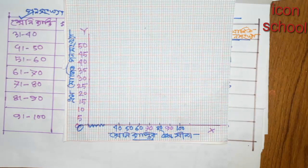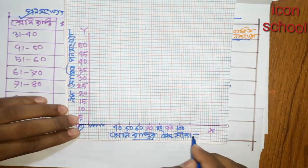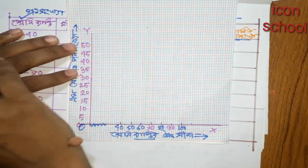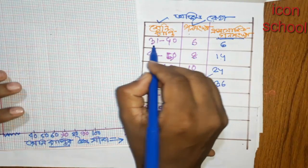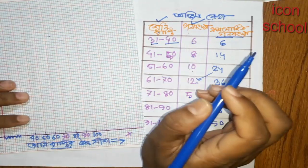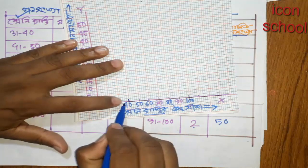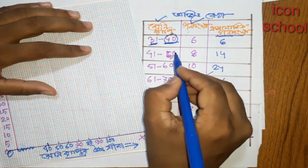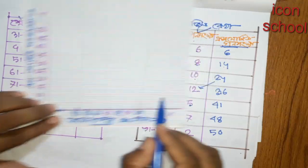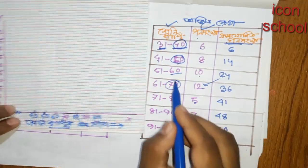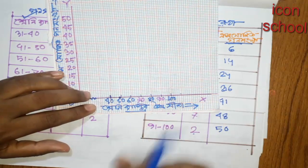Let's look at the graph paper. The graph paper is x and y. The graph is 5. The graph is 70. Here is the graph. The graph is 75. This graph I call from 20.